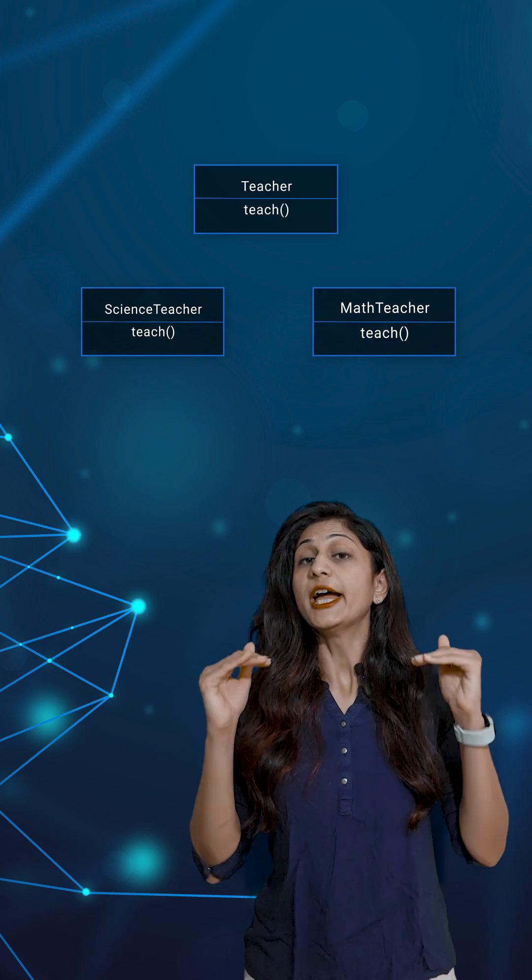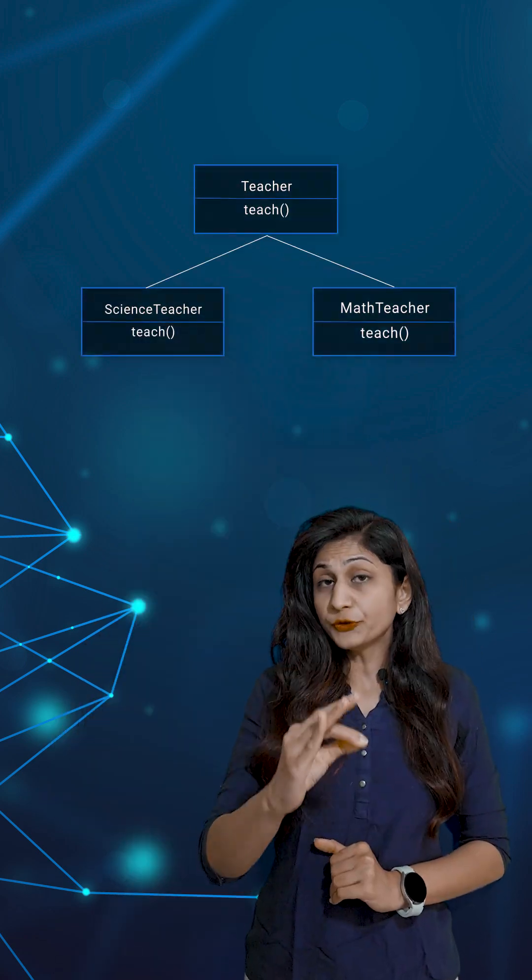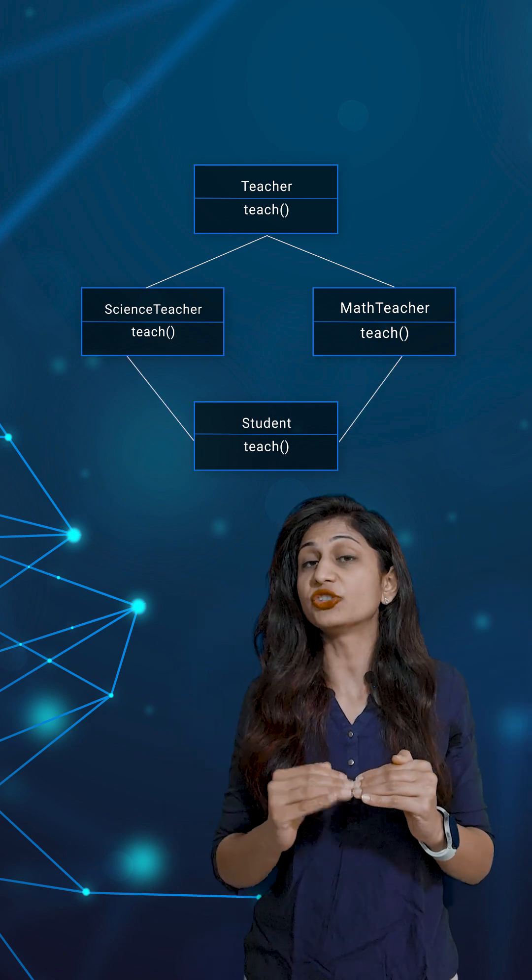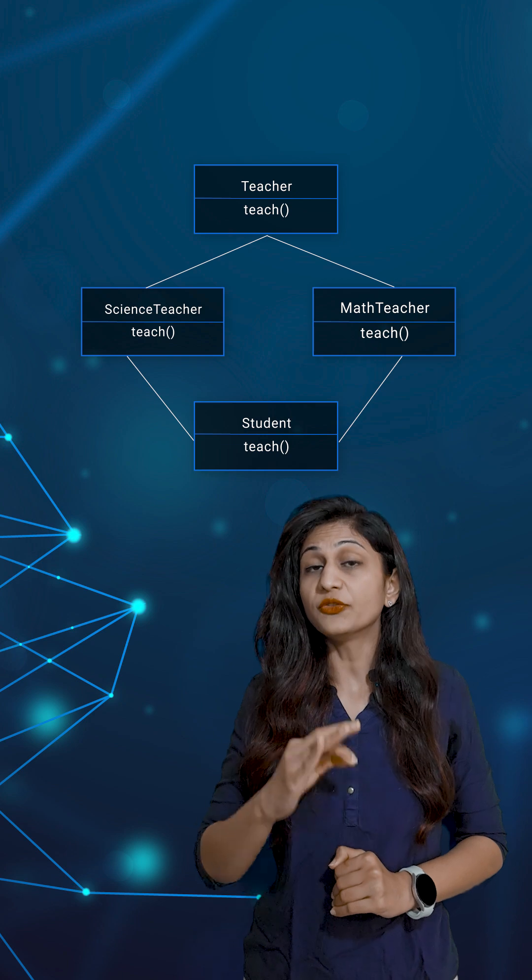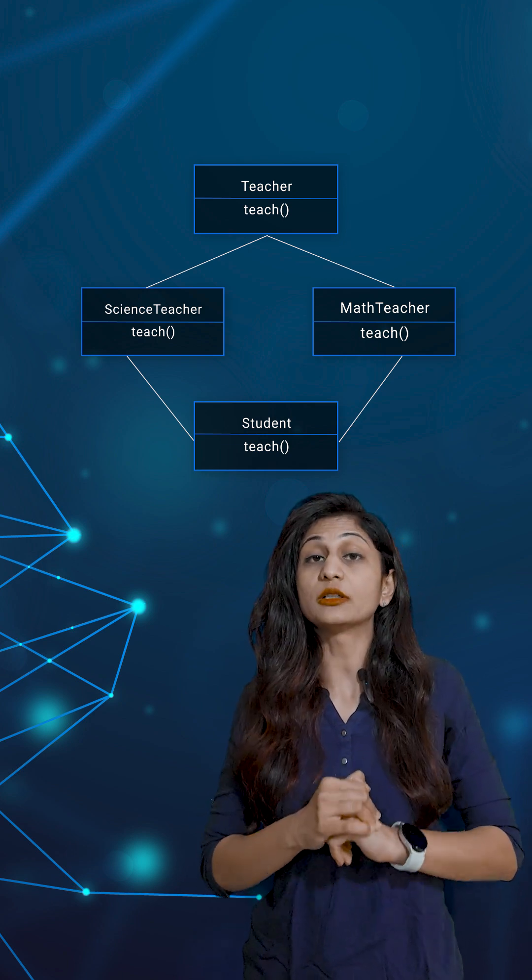other subclasses, MathTeacher and ScienceTeacher, and both of them are overriding this teach method. Let's say Java did support multiple inheritance. In this case, if you create a new class Student which is extending MathTeacher and ScienceTeacher as well, if you want to call the teach method from Student class, the compiler will be confused which method